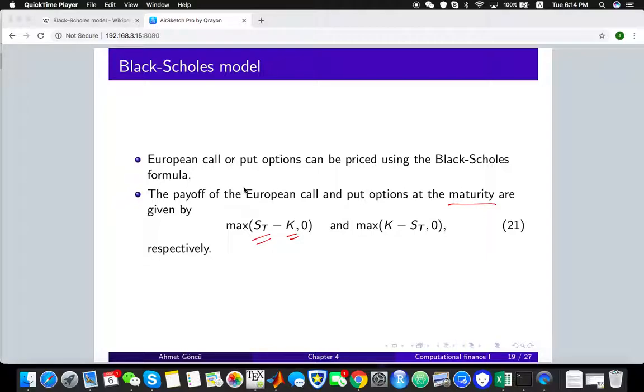The rational agent of course exercise this option only if there is a positive payoff. So at the maturity the payoff for the owner of this option can be described by this maximum of S_T minus K versus zero.